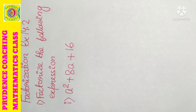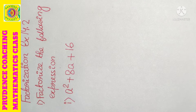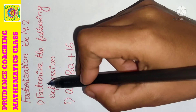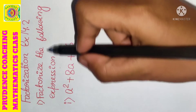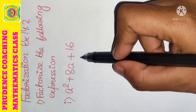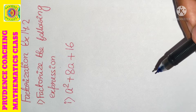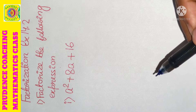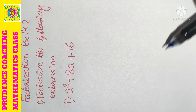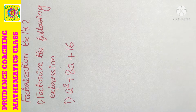Hello my dear students, welcome back to Prudence Coaching. Here we will be starting with exercise 14.2 of the chapter factorization. The first sum is to factorize the following expression. For solving all the sums of this particular exercise, you need to know three identities.